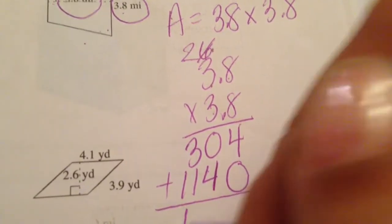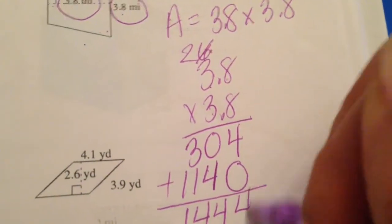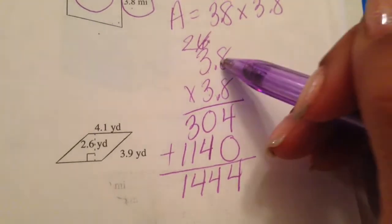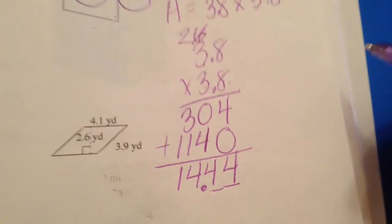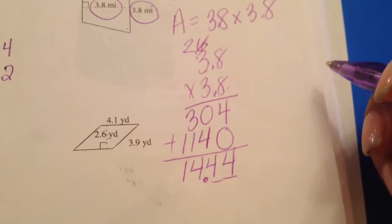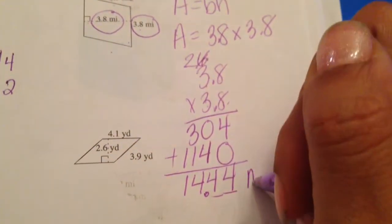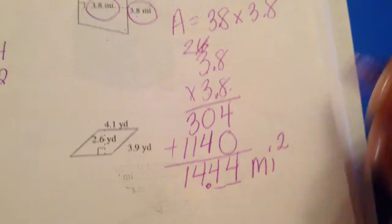And now you have 1, 4, 4, 4, 4. Don't forget the decimal. Two numbers behind decimals. Two numbers behind decimals. 14.44 square miles.